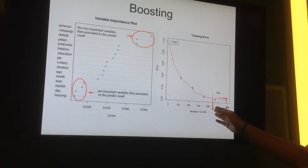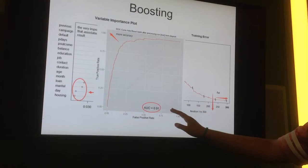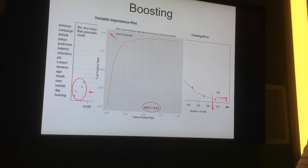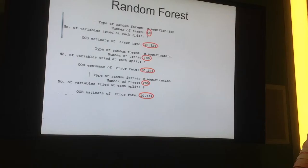So we can see that we just set the trees as 225, that's enough. And the ROC curve for boosting is 91%, which is higher than the decision tree.